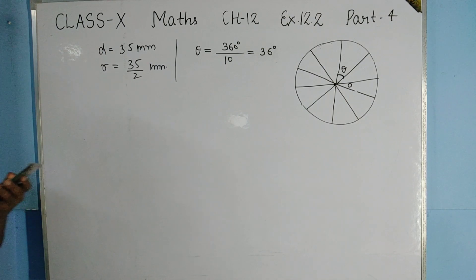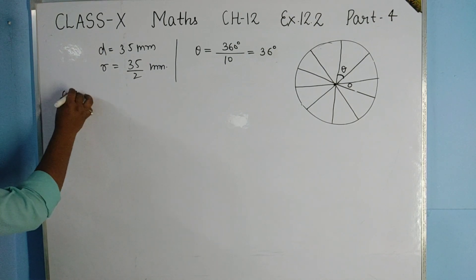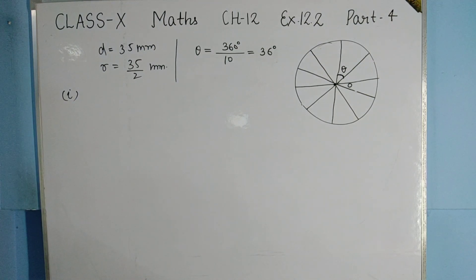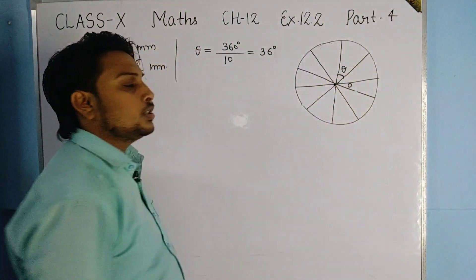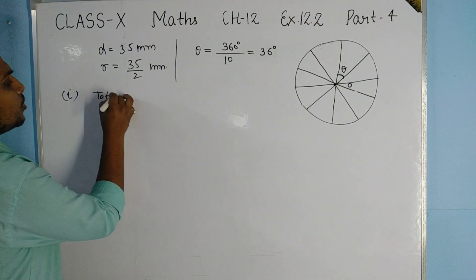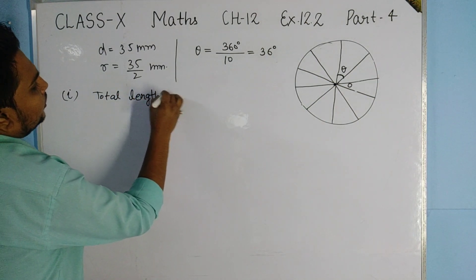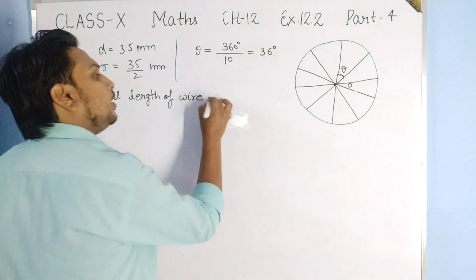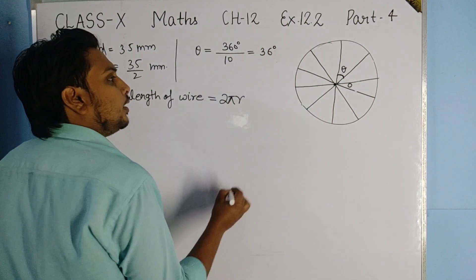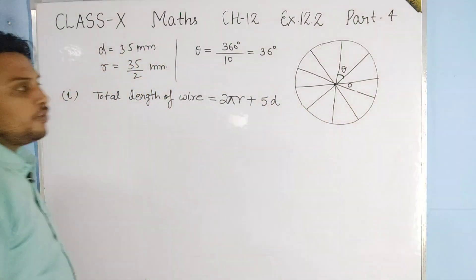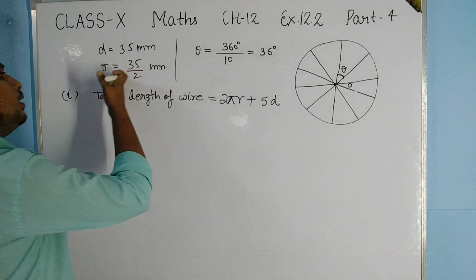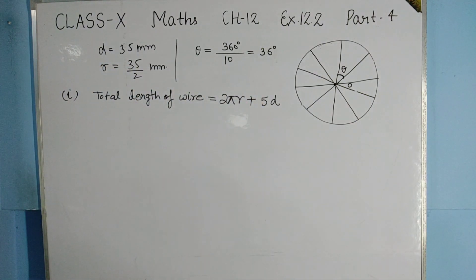For the total length of the silver wire: it equals the circumference of the circle (2πr) plus 5 diameters (5 × d). Put in the values r = 35/2 and d = 35, then simplify to get the result.